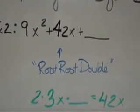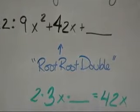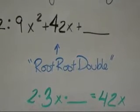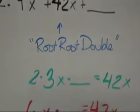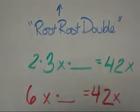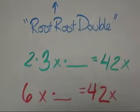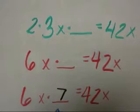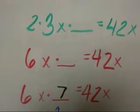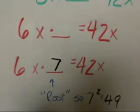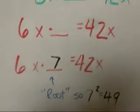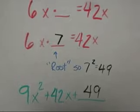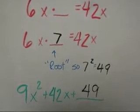2 times 3x, which is the square root of 9x², times something has to be 42x. 2 multiplied by 3x is 6x. So 6x multiplied by what is 42x? That's right, it's 7. But 7 is the root. So to undo a root, we square it. And 7 squared is 49. So in 9x² plus 42x plus what, the missing value is 49.